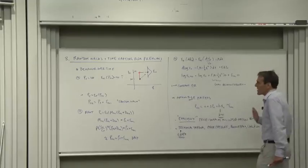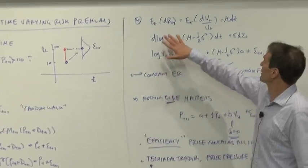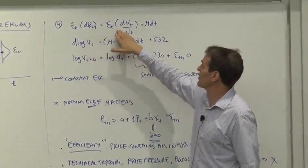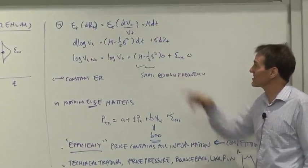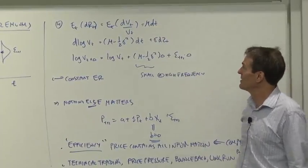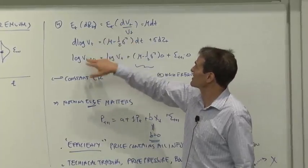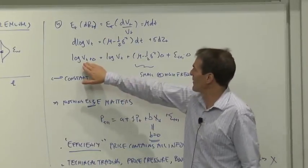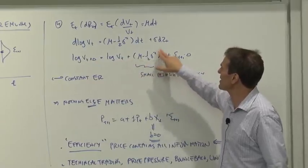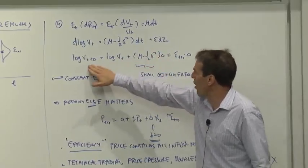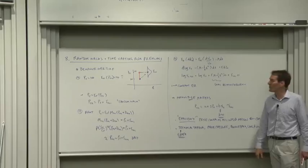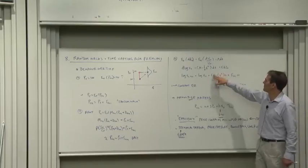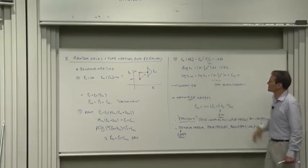Another touchstone coming back to our regular equations: suppose that expected returns in continuous time are constant through time. So the expected return, or the expected increase in the value process, is just mu — a constant that doesn't change over time. Then taking logs, the change in the log of Vt gives us the log of the value process equals today's log of the value process plus the expected return term. The log of the value process should follow a random walk with drift. But the drift term for daily or weekly data will be very, very small — so in fact, this is very close to a random walk as well.